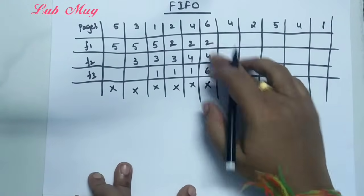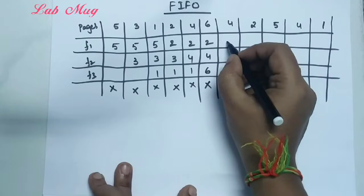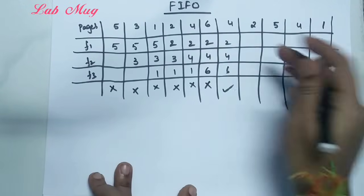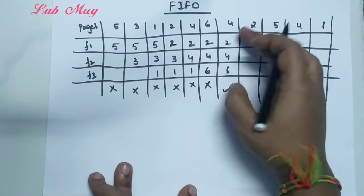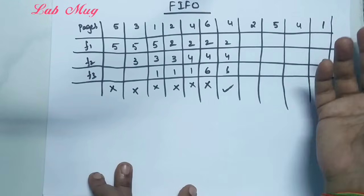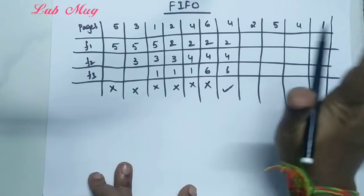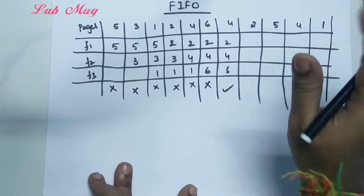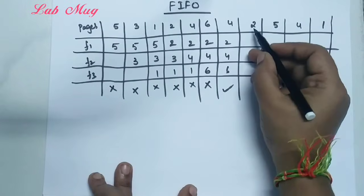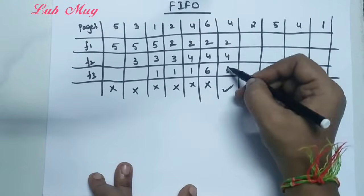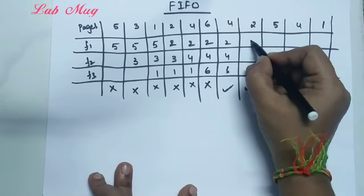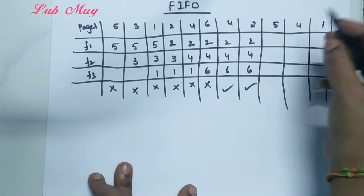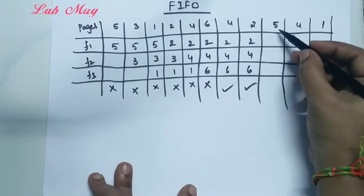Next is page 4. Page 4 is already in main memory — that is a hit, so no page replacement happens and it executes normally. Next is page 2. Page 2 is already in main memory — that is also a hit. Frames remain 2, 4, and 6.